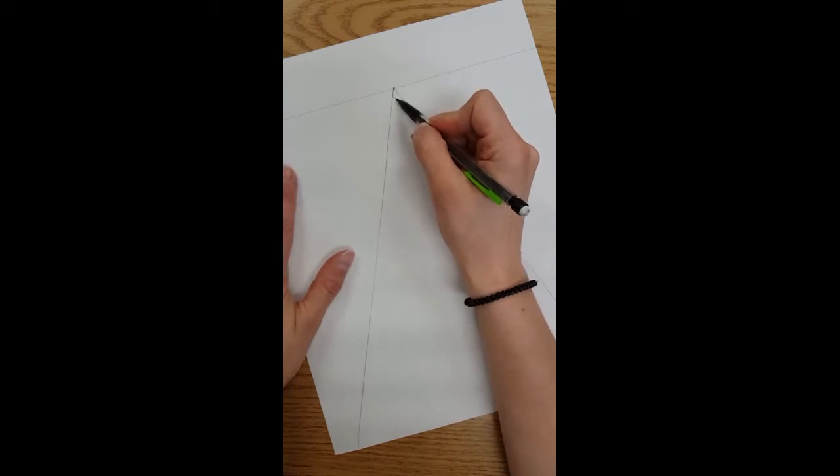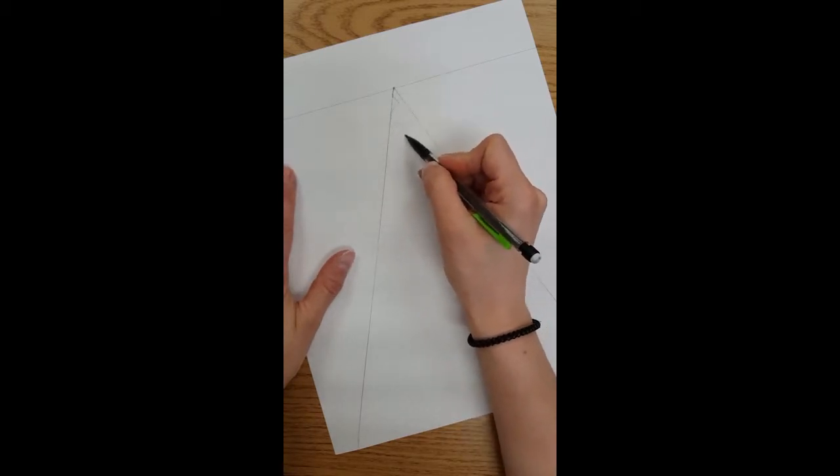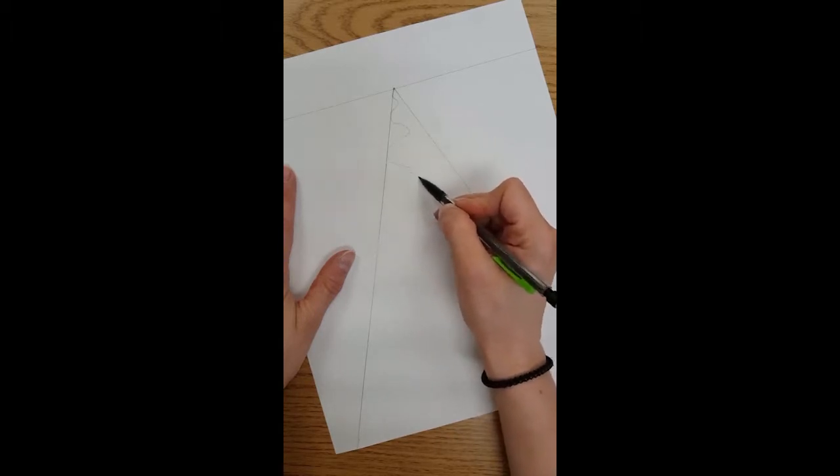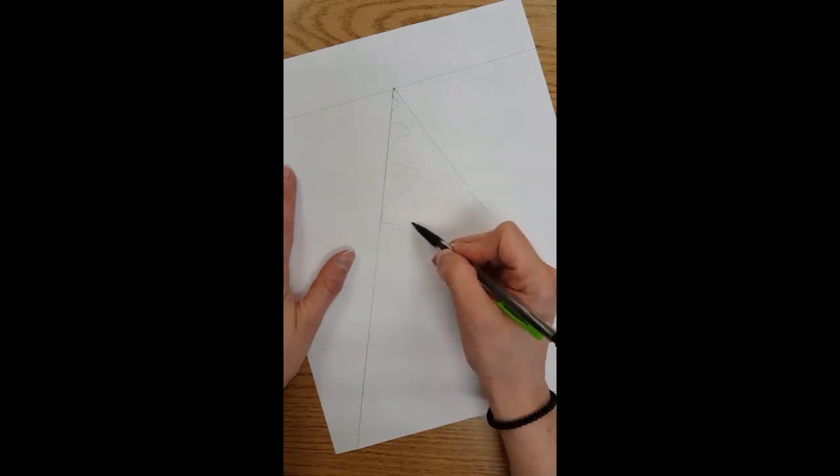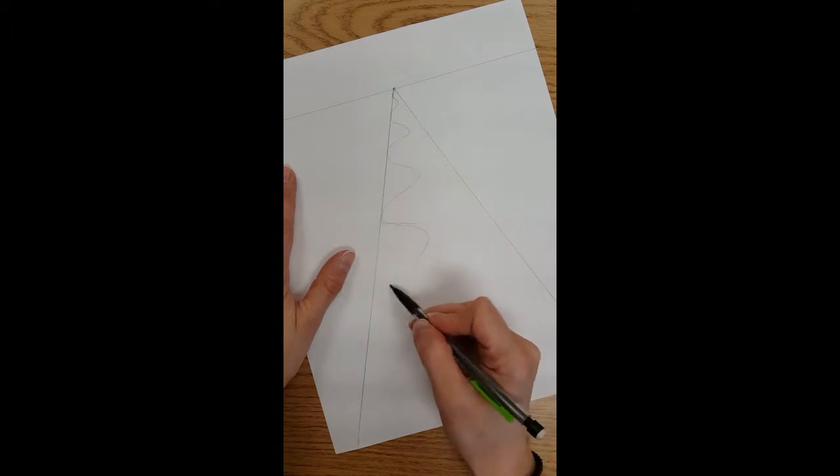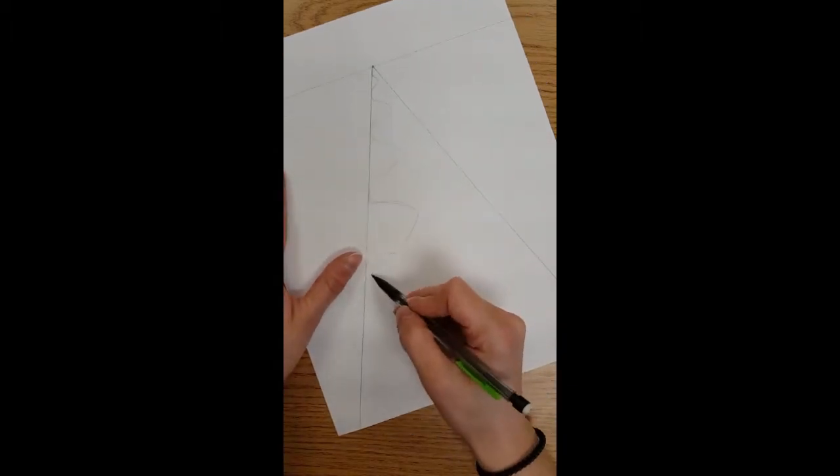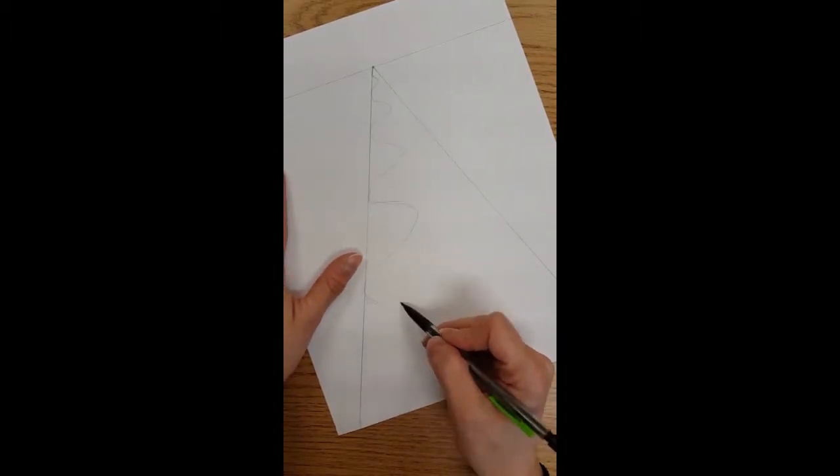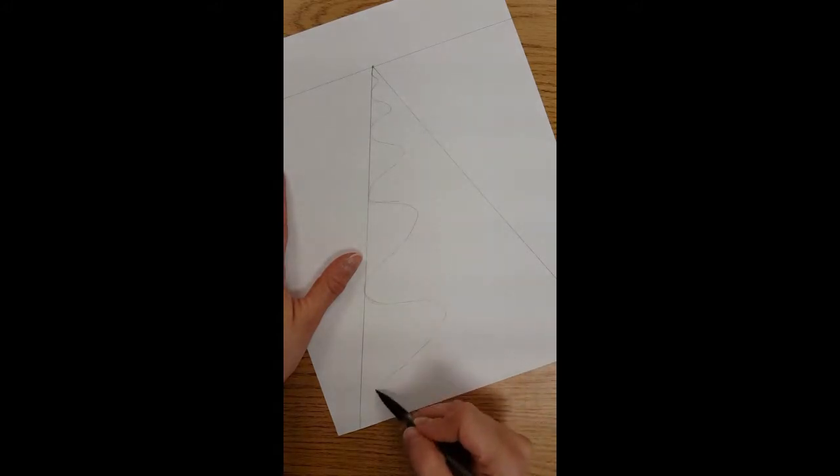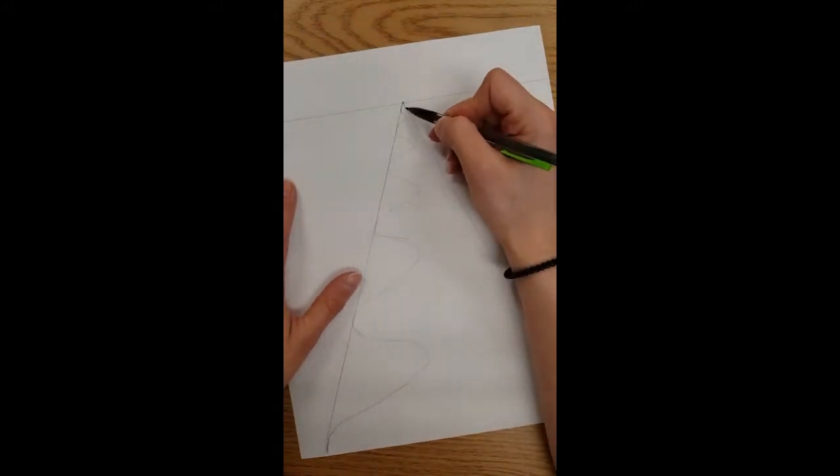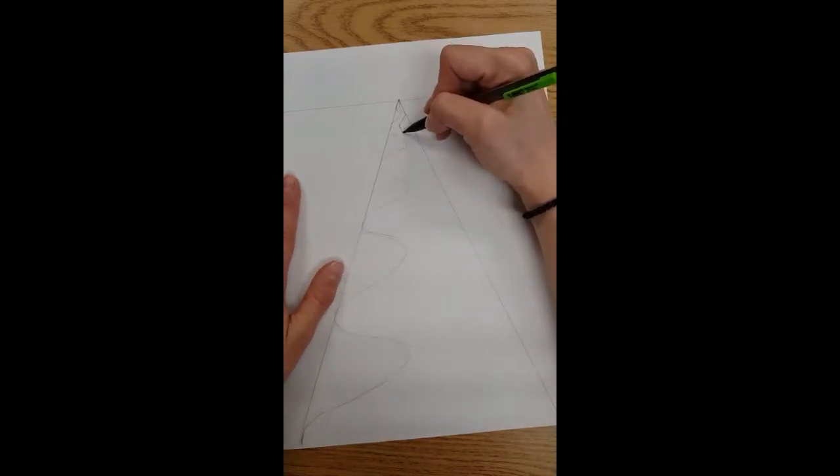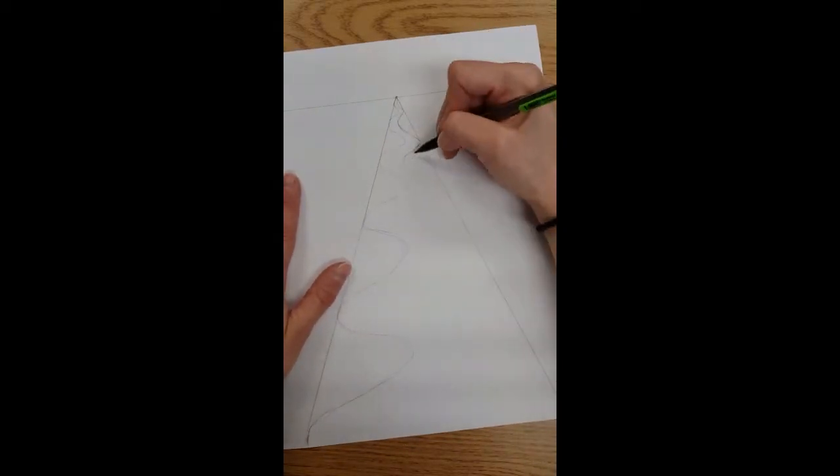And as I come further down, it's going to get farther apart and the curves will be less tight. Then the other side is kind of a copycat line, but it's hitting the opposite line—it's hitting the line on the right.